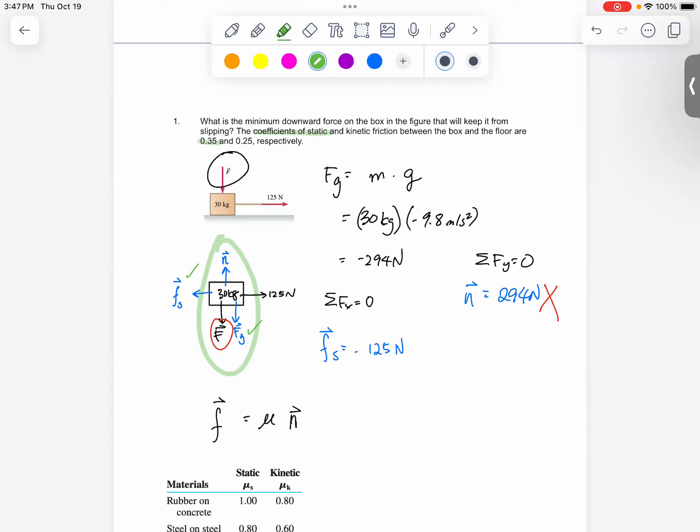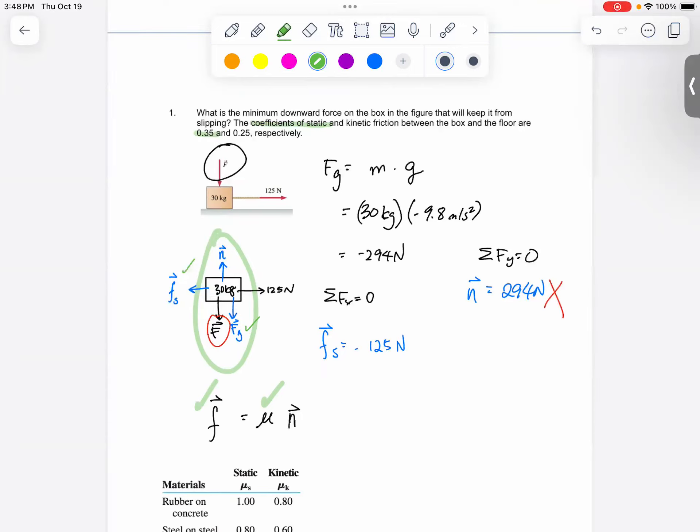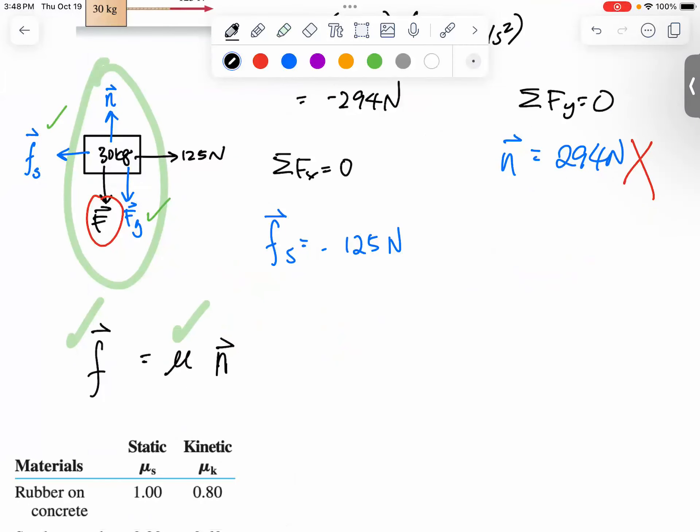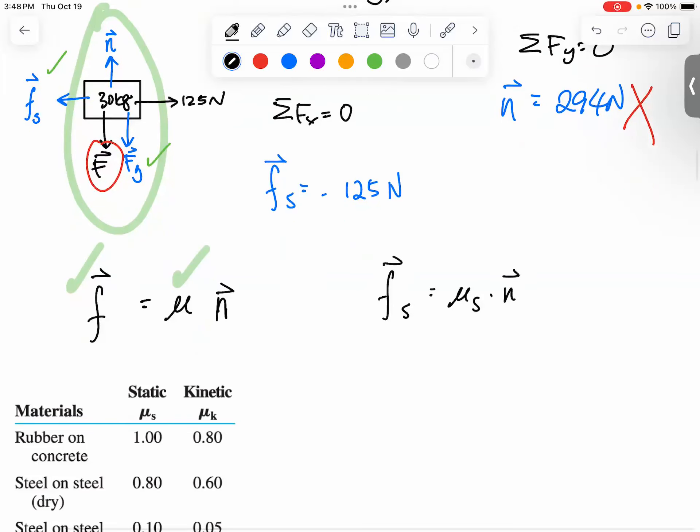So now I want to introduce you this equation because we actually have the coefficient of static friction, that is 0.35. So we have the coefficient of static friction, we know the friction force. So therefore, we can go ahead and calculate and say, 'oh yeah, so I have two out of the three pieces of information. I could actually go ahead and calculate it.' We can calculate the normal force.